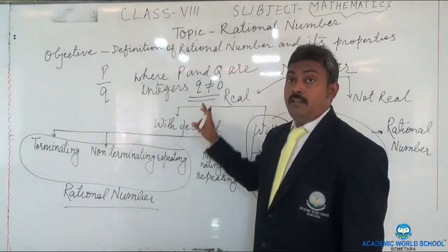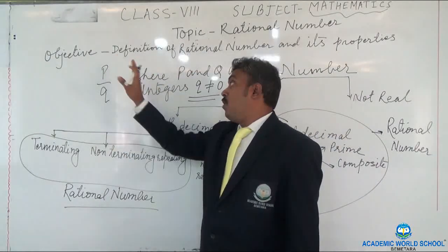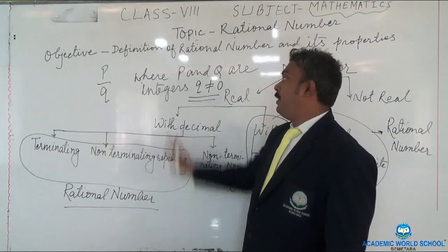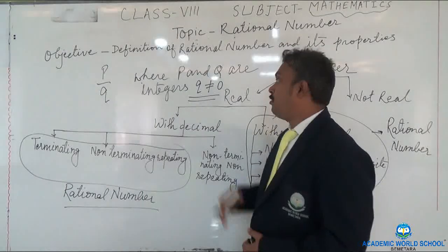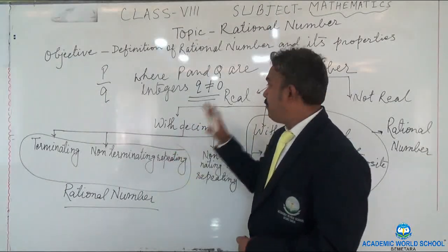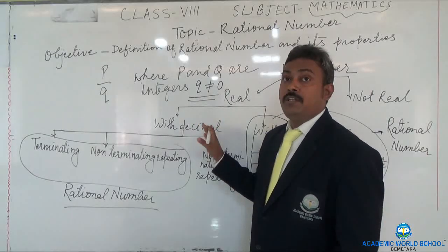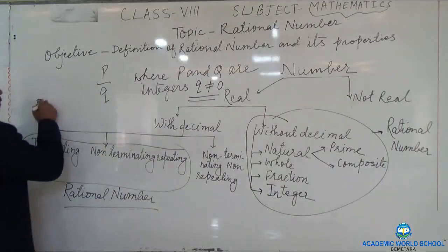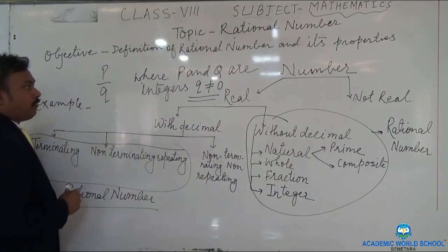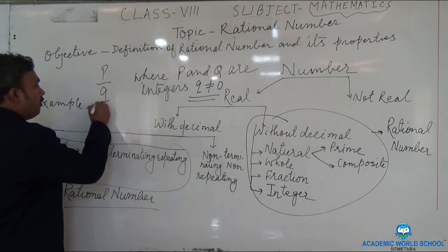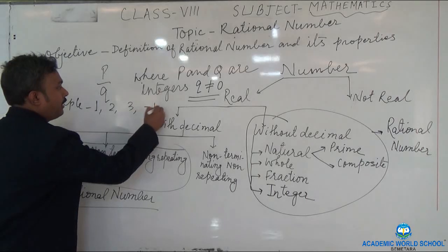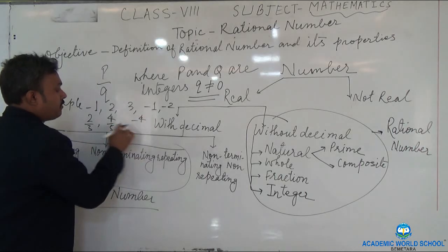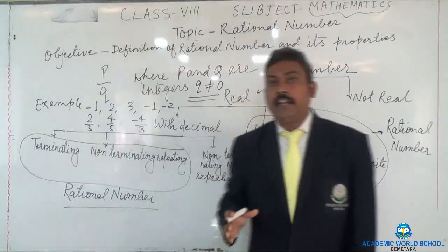Q should never be zero. We are talking about what kind of numbers P and Q can be — P and Q should be integers. We know that in integers, zero also comes, but the important condition is that Q should not be equal to zero. Examples of rational numbers: 1, 2, 3, -1, -2, 2/3, 4/5, -4/3. These all are examples of rational numbers.